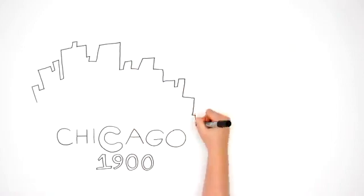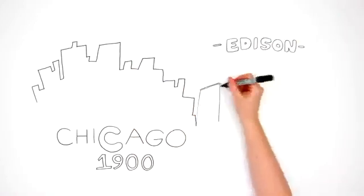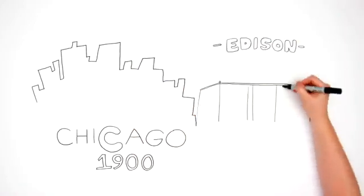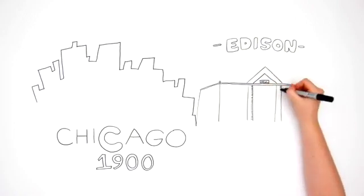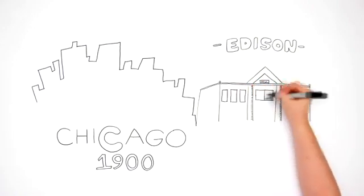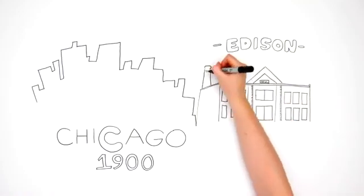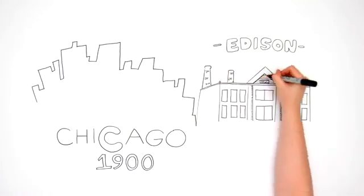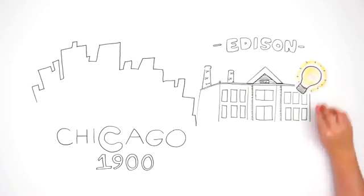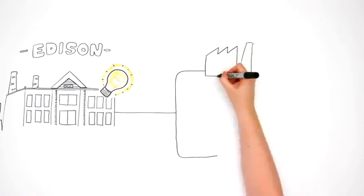Chicago 1900. The Edison Power Company developed the turbine power station, which could generate and distribute large-scale power to business. This provided cheaper, more reliable and cleaner power than any factory or business-based generator, without many of the headaches. By 1920, most businesses had made the switch.